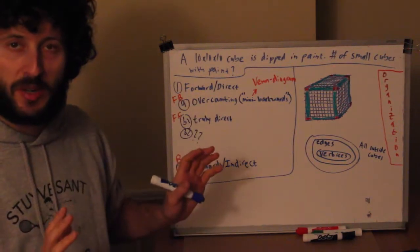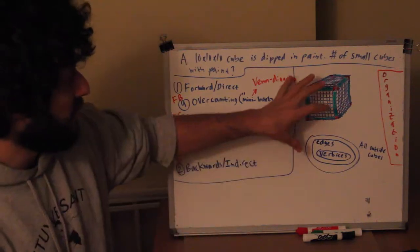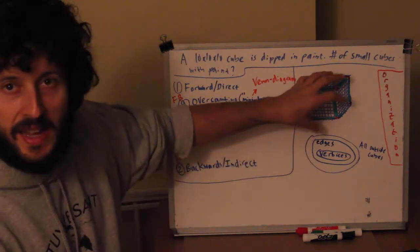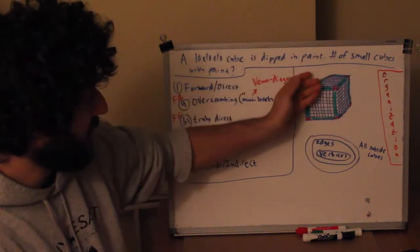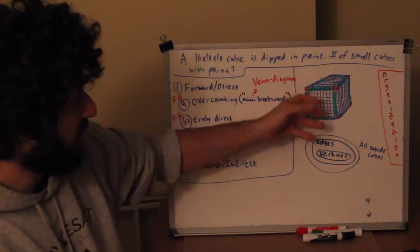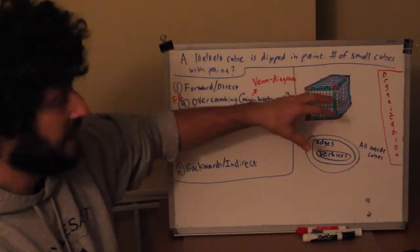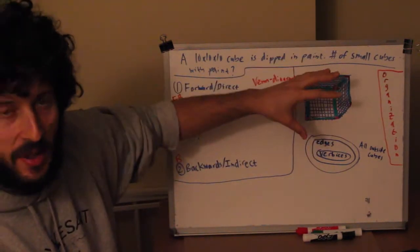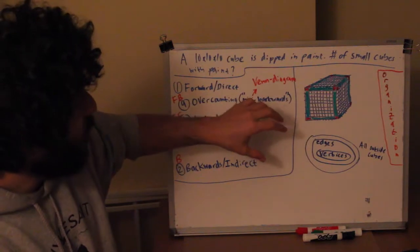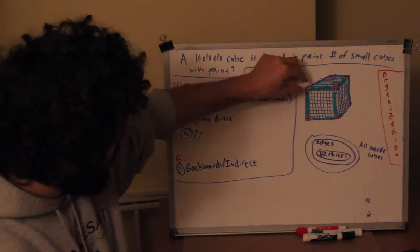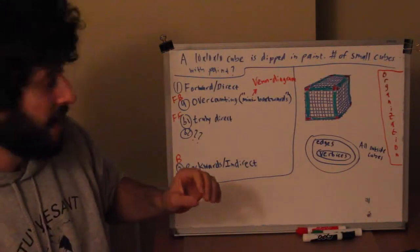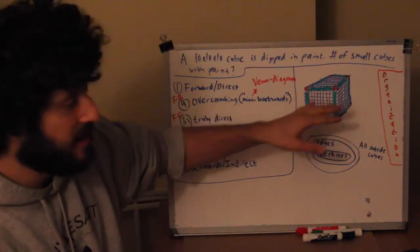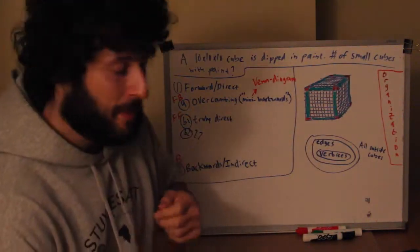Just to make sure we're on the same page, let's say you take this cube and you dip it into paint — all the stuff on the outside, this entire surface area, will be painted red or whatever. The question is: how many of these little 1 by 1 by 1 cubes will have paint on them, assuming that all the stuff inside basically doesn't have paint on them.